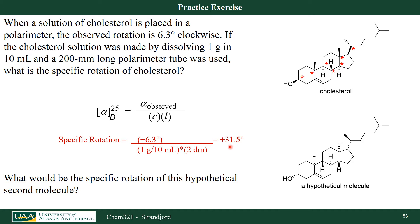I should get that same number anywhere in the world, no matter which polarimeter I use, as long as I divide my observed rotation by my concentration and path length. Cholesterol is made by living organisms and only makes one enantiomer. If I had the other enantiomer — all seven stereochemistries inverted — its specific rotation would be opposite and equal. That's the definition of an enantiomer. So if the naturally occurring one rotates plane polarized light at +3.15 degrees, its enantiomer would rotate it counterclockwise at 3.15 degrees.